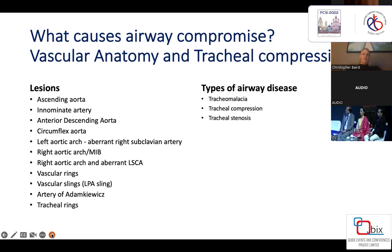Vascular anatomy and tracheal compression. There are many lesions: those associated with the ascending aorta, innominate artery, descending aorta, circumflex aorta, left aortic arch, right aortic arch with mirror image branching, right arch with aberrant left subclavian artery, other vascular rings, vascular slings such as the LPA sling, and tracheal rings.